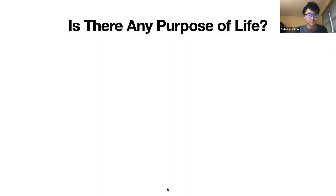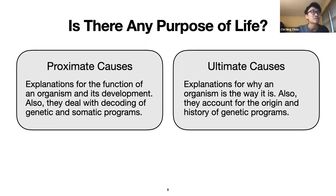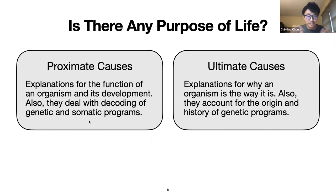Proximate causes are explanations about the function of an organism — for example, the function of our eyes — and also the explanation for the developmental process. It's asking how and why a genetic or somatic program can be decoded in a certain way to give this kind of functionality to organisms. This touches on the 'purpose' of an organism, either at the organ level or for an individual. Ultimate causes also ask for explanations of purpose, but through a historical lens — through the lens of evolution — asking why we have this kind of organism or why a certain species got selected.